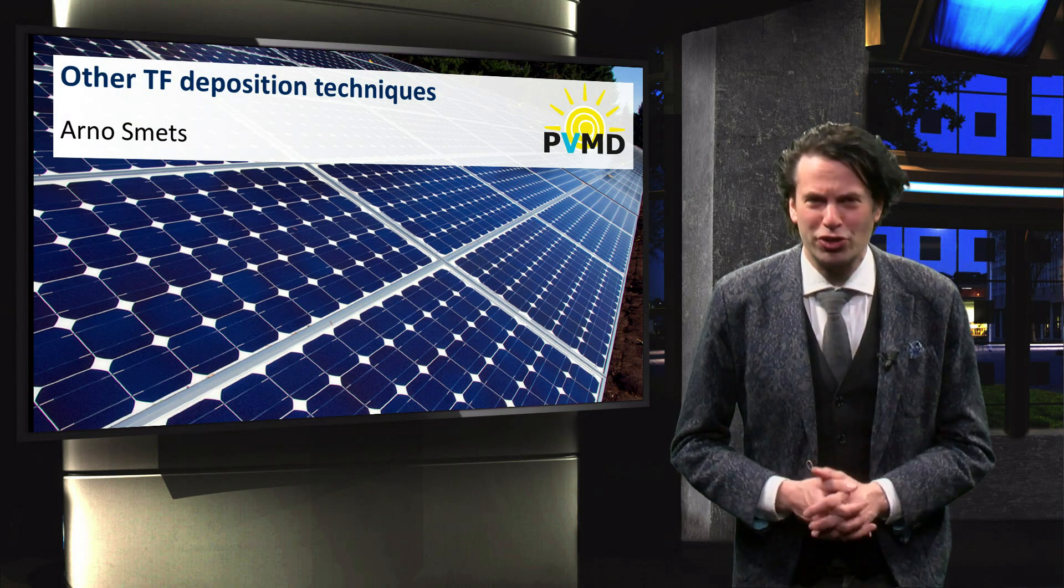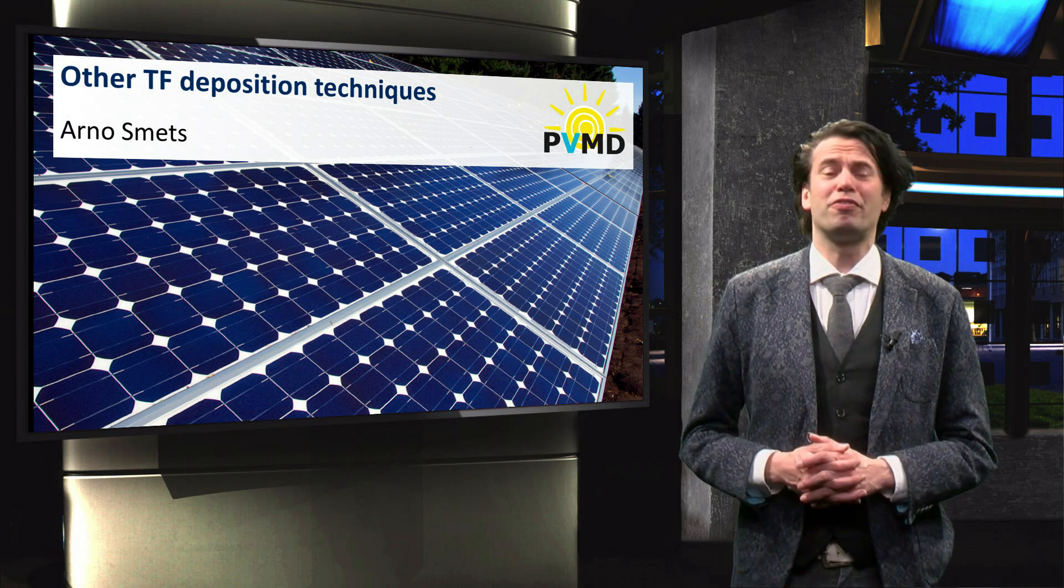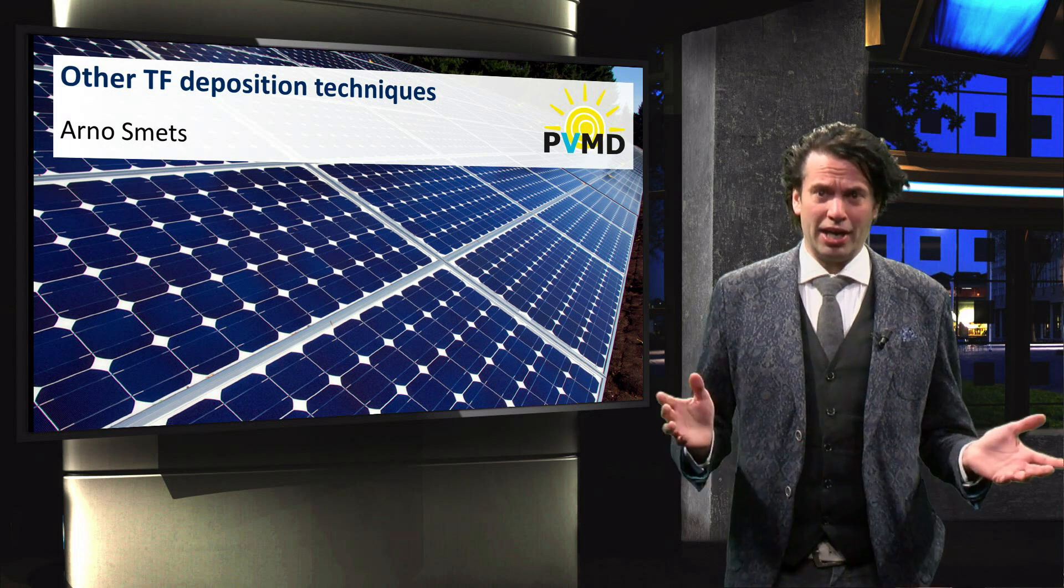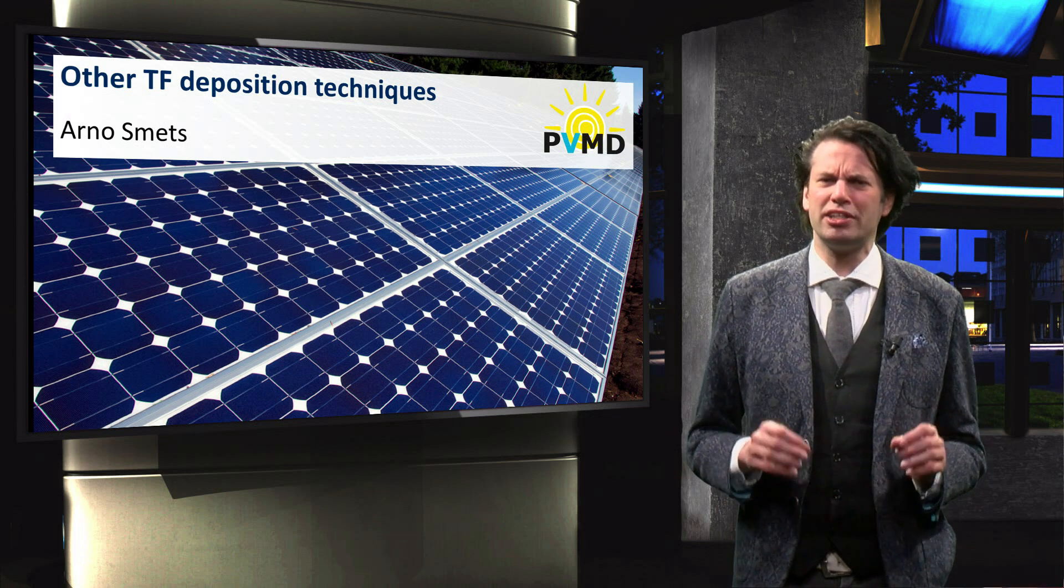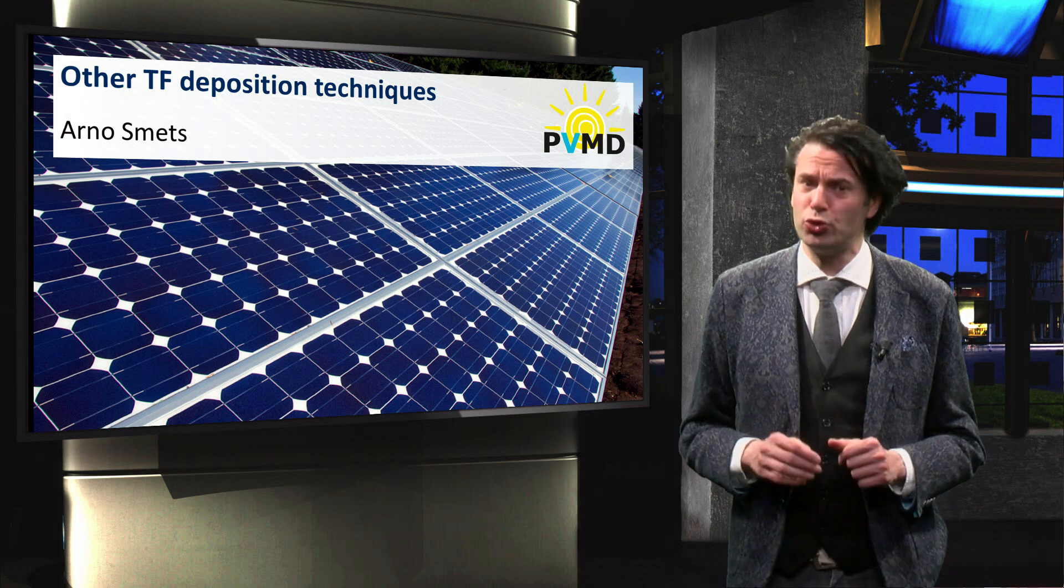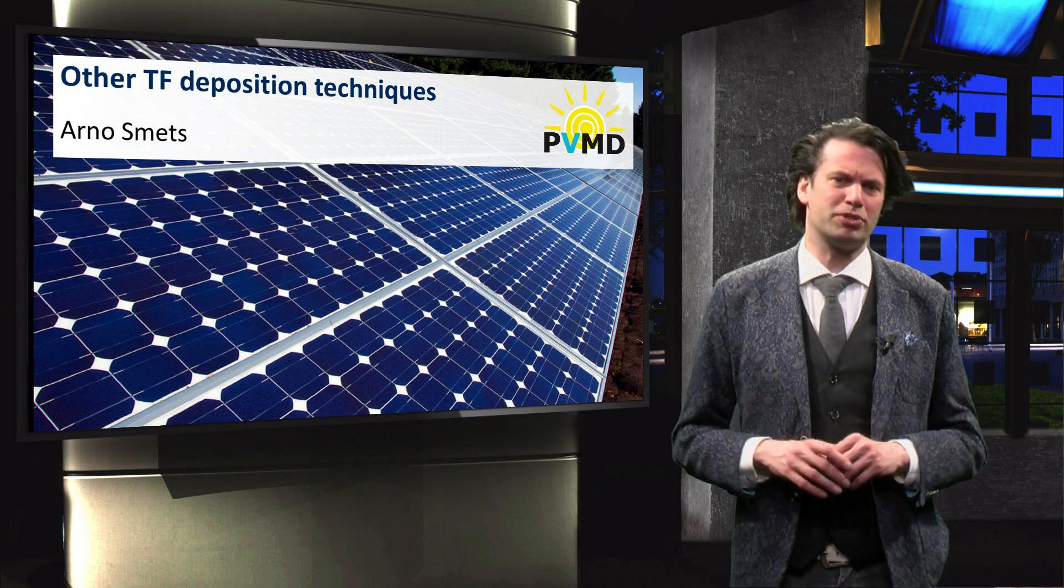In this section we discuss some of the most important thin film processing techniques used for thin film solar cells. In the preceding videos we discussed plasma-enhanced chemical vapor deposition, which is primarily used for the deposition of thin film silicon alloys.